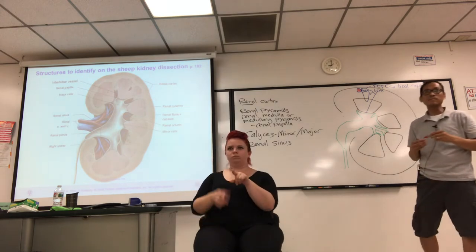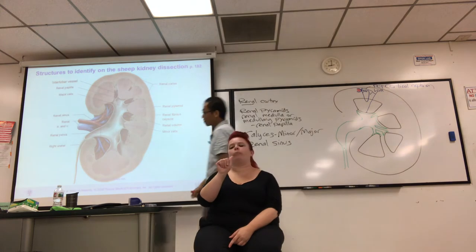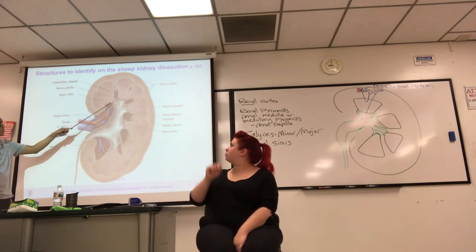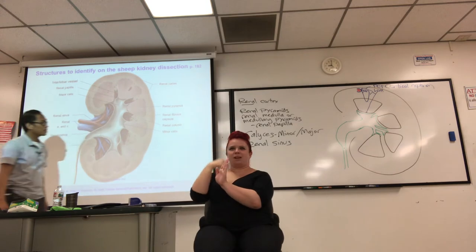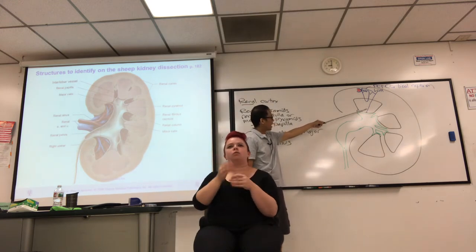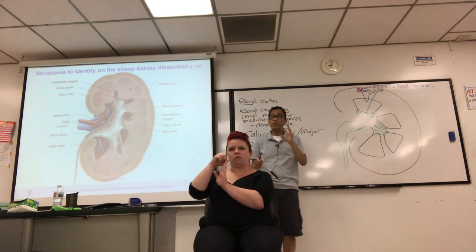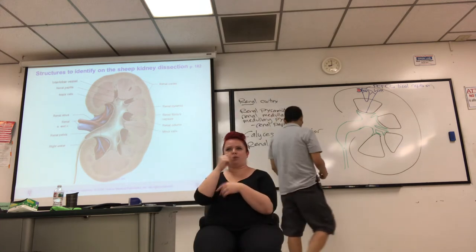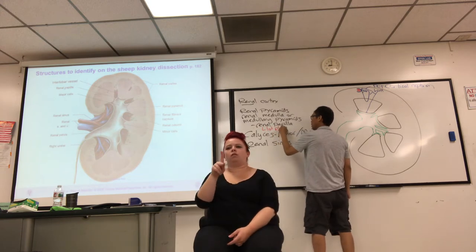Looking at the collecting duct: it has the finished product at the tip — you finish modifying the filtrate at the tip. So the renal papilla is the first place you have urine, because you're done modifying the filtrate at that point. Write that down — renal papilla, first place you have urine.